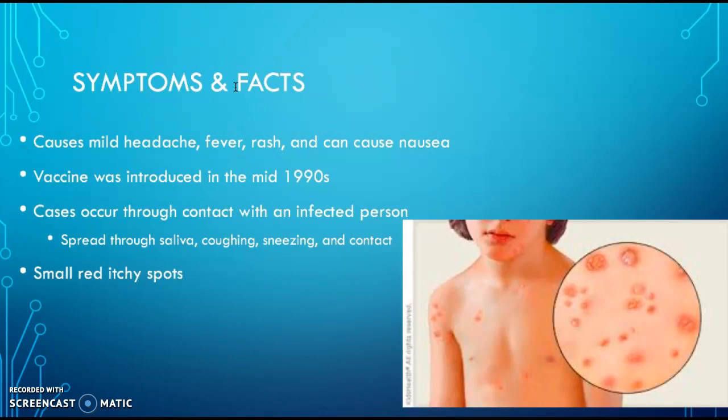The vaccine was introduced in the mid-1990s, and it's very important to get vaccinated because this disease is very contagious. It can spread through saliva, coughing, sneezing, and contact with another person. If the fluid from the blisters were to reach you, you could acquire this virus. It remains extremely contagious until all the blisters are crusted over. Blisters first develop in clusters and generally appear around the face, chest, stomach, and limbs.